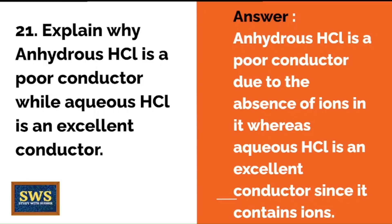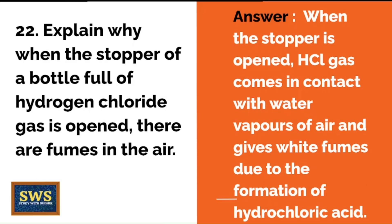Explain why anhydrous HCl is a poor conductor while aqueous HCl is an excellent conductor. Anhydrous HCl is a poor conductor due to the absence of ions, whereas aqueous HCl is an excellent conductor since it contains ions. When the stopper of a bottle full of hydrogen chloride gas is opened, HCl gas comes in contact with water vapors in the air and gives white fumes due to the formation of hydrochloric acid.